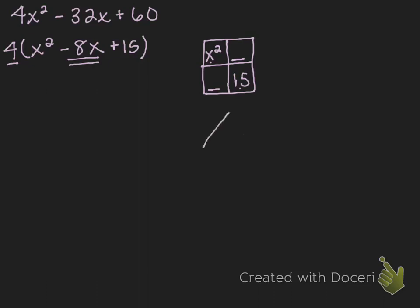This is where we're going to use our diamond problem. In the top of the diamond I'll put the product, which is 15x squared, and then in the bottom I'll put the sum I'm looking for, which is negative 8x. I'm trying to think of two numbers that multiply to 15x squared but add to negative 8x. If you're struggling, write yourself a list of the factors of 15x squared. What you're going to use is negative 5x and negative 3x — they multiply to positive 15x squared and add to negative 8x. So the two missing boxes are negative 5x and negative 3x.